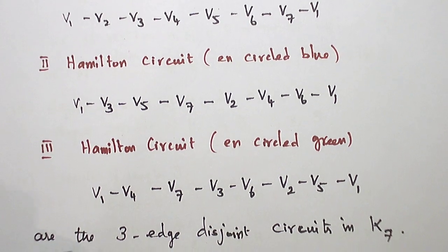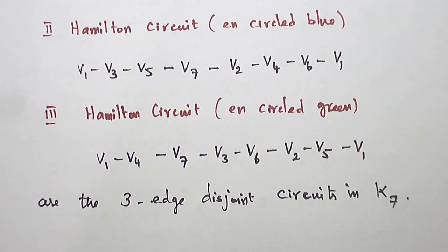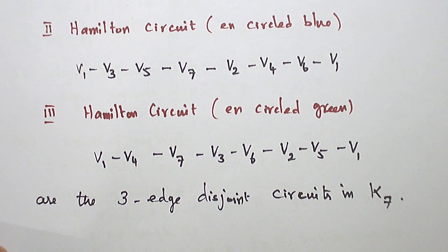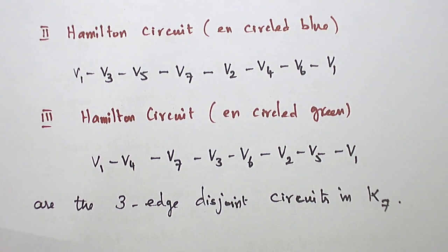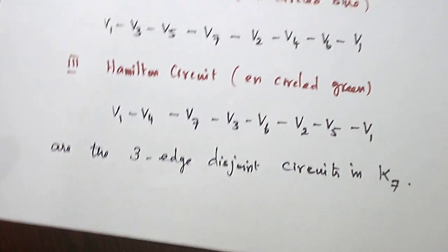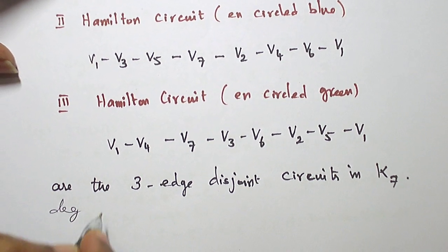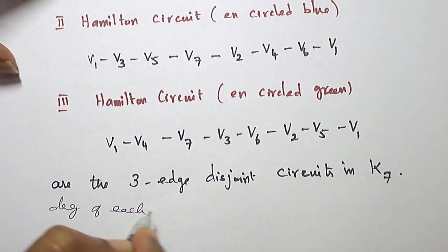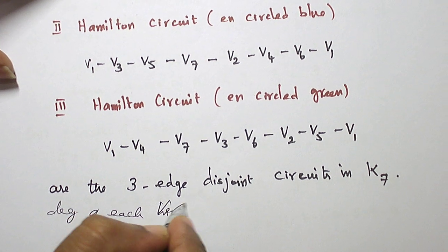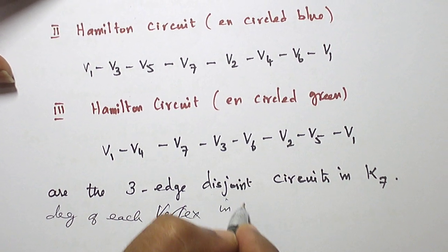So there are three edge-disjoint Hamilton circuits in K7. And I can give one more information. The degree of each vertex in K7 is 6.